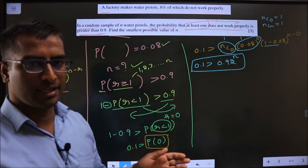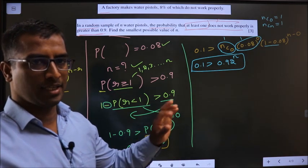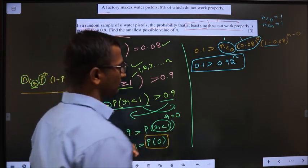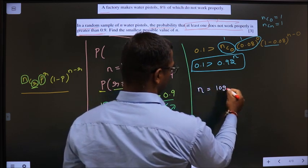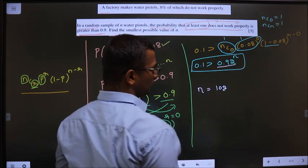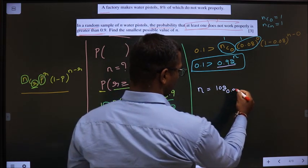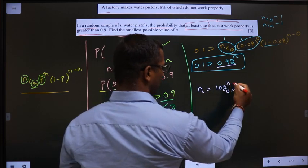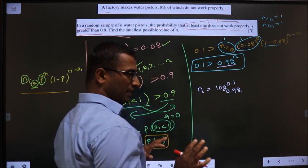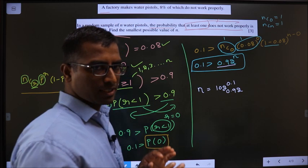Now. Either I can go with trial and error or I use logarithms in this way. See. n will be log of. Here 0.92 is the base. For the logarithm also, you will get the same base. And 0.1 over here. Okay. This is how we use logarithms.